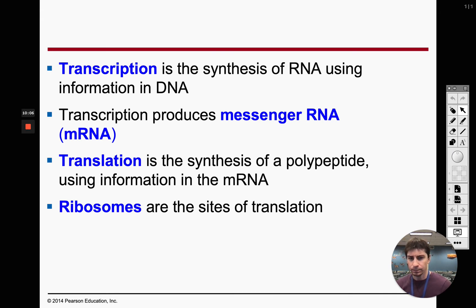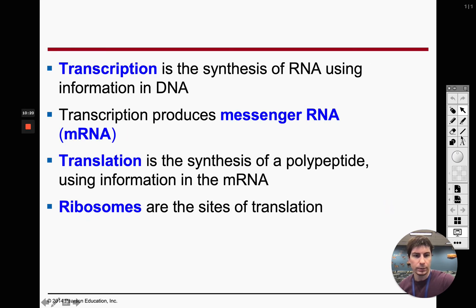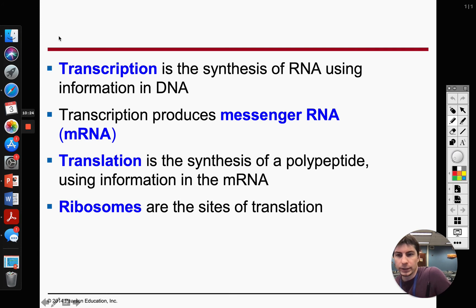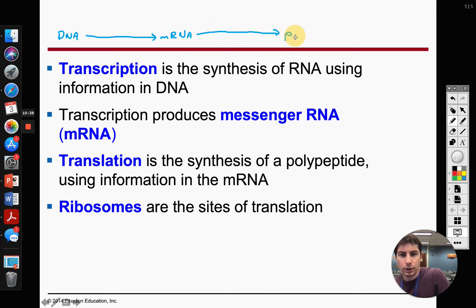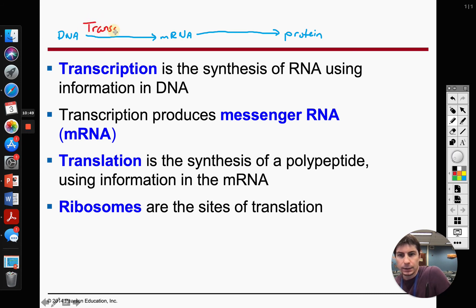Translation is our second stage. We take the mRNA made during transcription and use it to produce a protein. So the full pathway is: DNA → mRNA (transcription) → protein (translation). Transcription occurs in the nucleus, and translation occurs on a ribosome, whether it's a free ribosome or one on the rough ER.